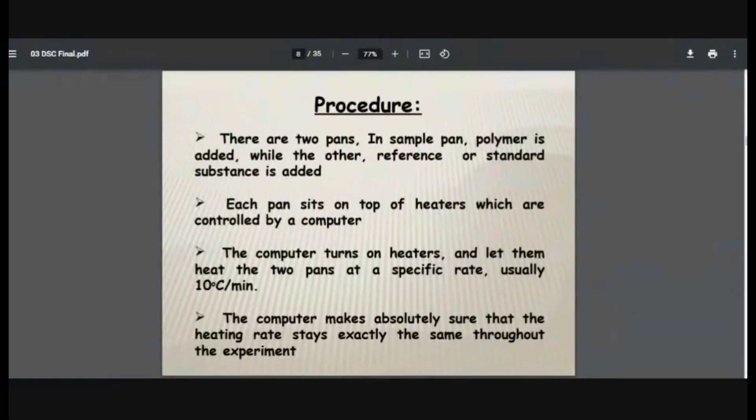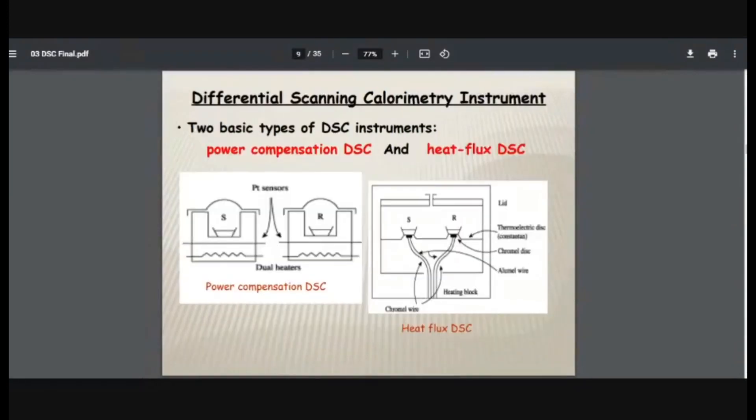Now let us see procedure in brief. There are two pans. In one sample pan, polymer is added, the sample is added, while the other reference or standard substance is added, or it may be left empty. Each pan sits on top of heaters which are controlled by your computer. So heaters are controlled by a computer. The computer turns on heaters and lets them heat the two pans on which heaters are kept - the heaters on which pans are kept. Two pans at specific rate, usually 10 degrees Celsius per minute. The computer makes absolutely sure that the heating rate stays exactly the same throughout the experiment.